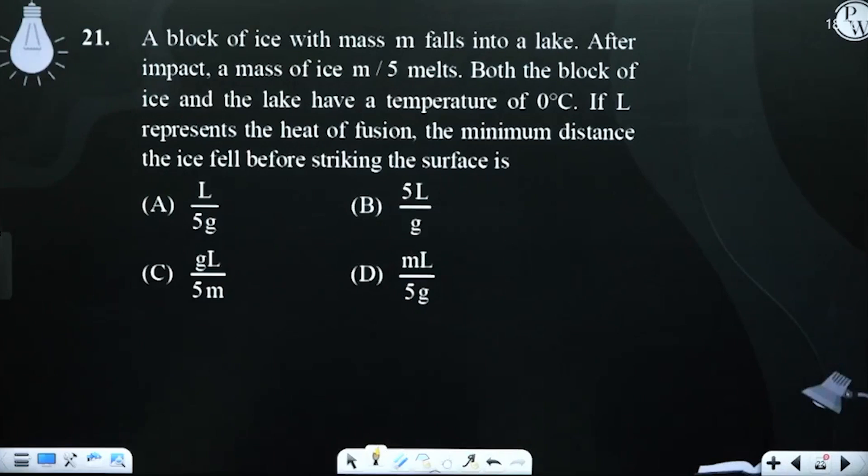Both the block of ice and the lake have the same temperature, zero degrees Celsius. If L represents the latent heat of fusion, the minimum distance the ice fell before striking the surface...